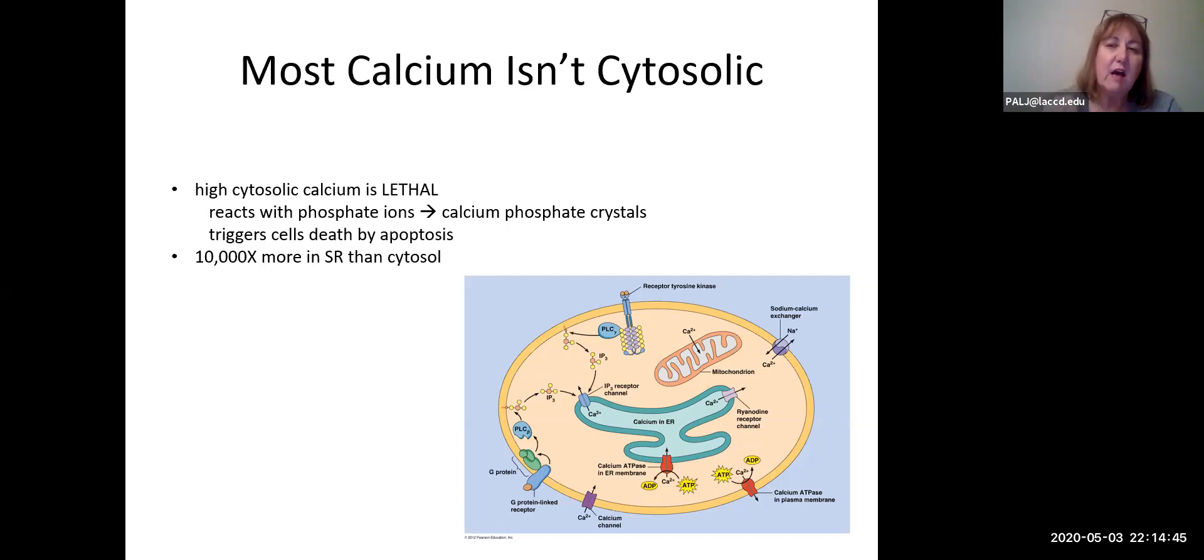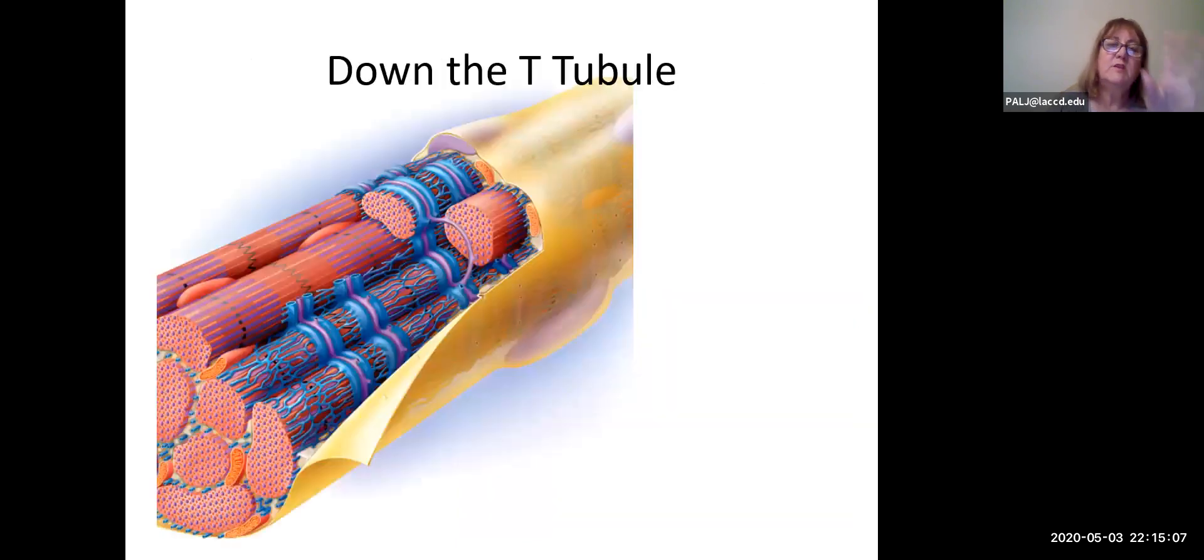If we were actually to look at how much calcium was floating around in the cytosol, there would be 10,000 times the amount in the sarcoplasmic reticulum. Let's talk about the T-tubule. Go back and look at the yellow sarcolemma, and you'll notice periodically, like where I'm pointing with the arrow, there are these little indentations, like someone took their finger and poked. That is the entrance to a T-tubule.